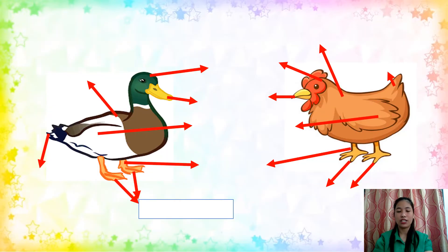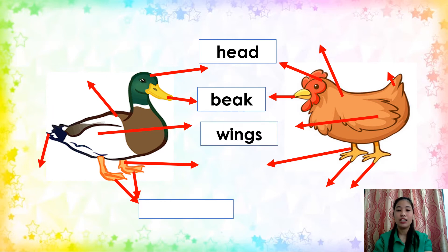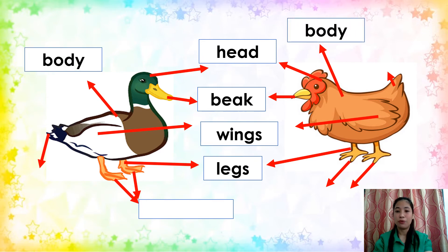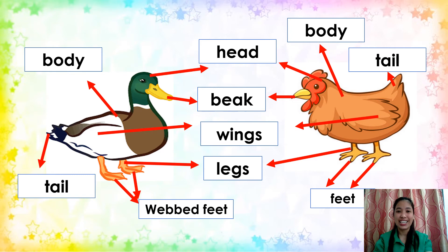We have duck and chicken in the picture — they are also in the family of birds. What are the external body parts of duck and chicken? They have their head, the beak which is used to get food, wings, legs, body, and web feet which is used by the duck to move in water. The chicken also has feet but it's not web feet. They also have their tail.